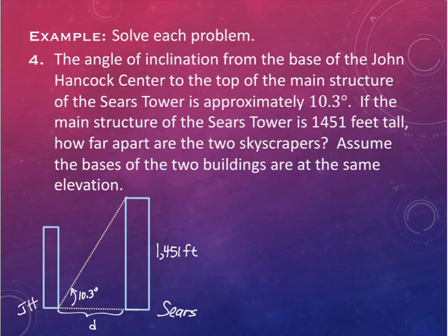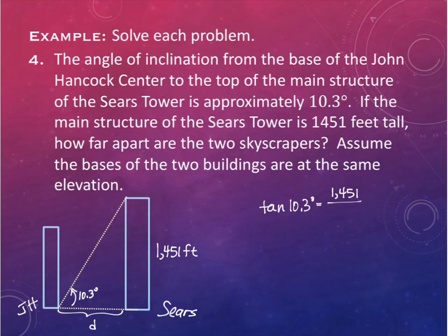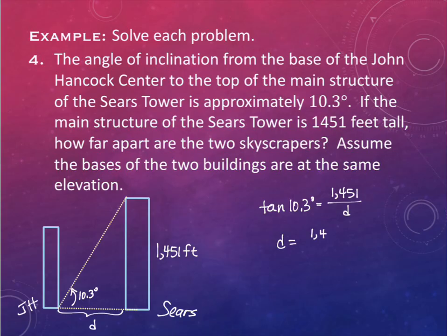This is another tangent problem. Tangent of 10.3 degrees equals 1,451 divided by D. To solve: multiply both sides by D, then divide both sides by tangent of 10.3 degrees. So D equals 1,451 divided by tangent of 10.3 degrees.